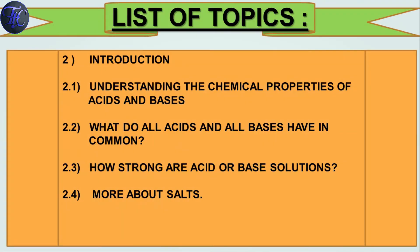We will be going to learn this chapter in 5 parts. First, Introduction. Second, Understanding the Chemical Properties of Acid and Base. Third, What do all acid and all base have in common? Fourth, How strong are acid or base solution? And last, More about Salts. In this video lecture, we will be seeing the introduction of this chapter.